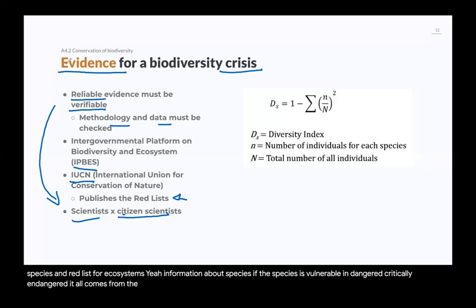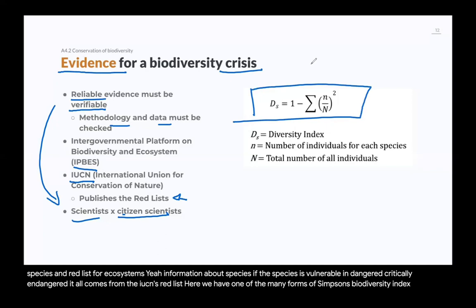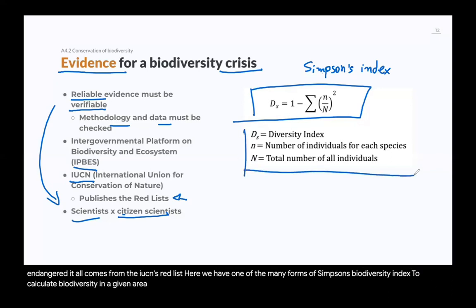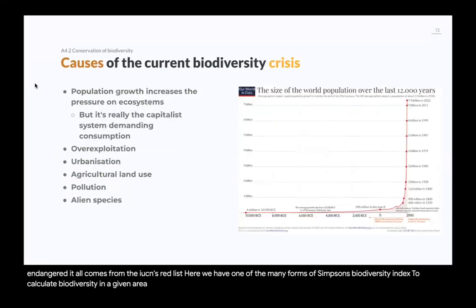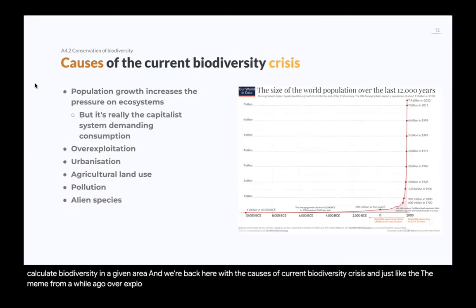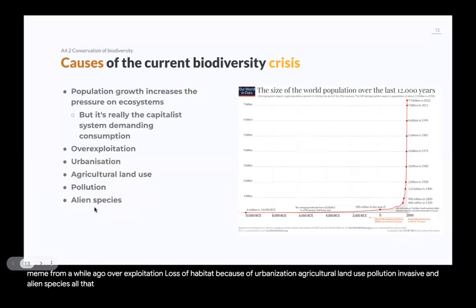Here we have one of the many forms of Simpson's Biodiversity Index, a way to calculate biodiversity in a given area. And we're back to the causes of the current biodiversity crisis: overexploitation, loss of habitat due to urbanization and agricultural land use, pollution, and invasive and alien species — all causes of the current biodiversity crisis.